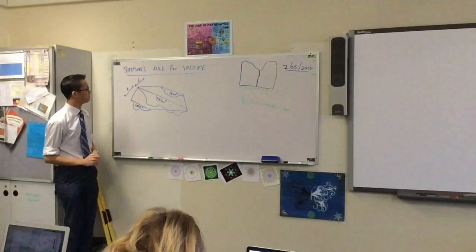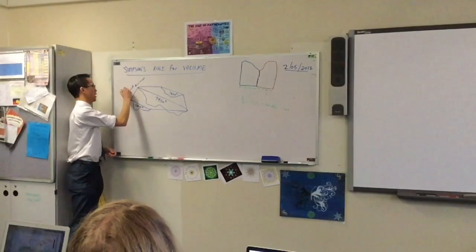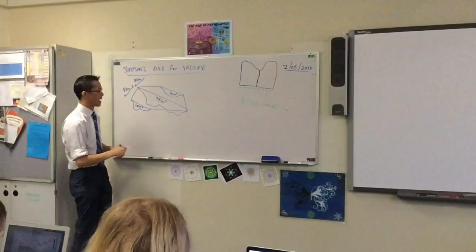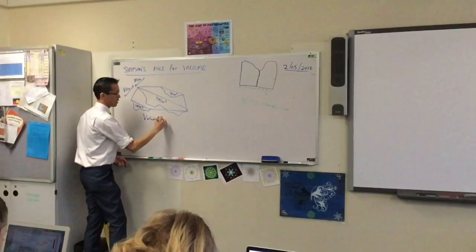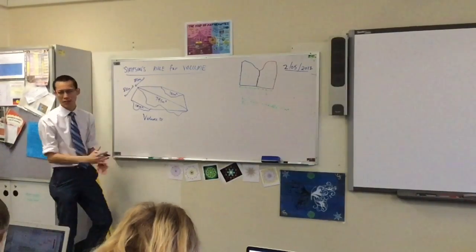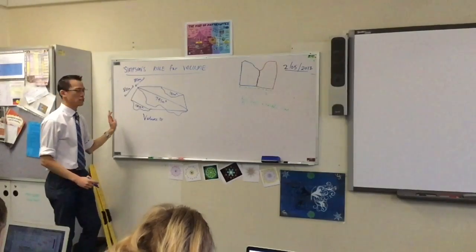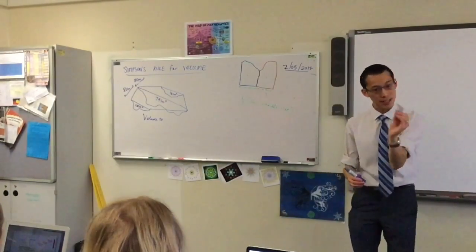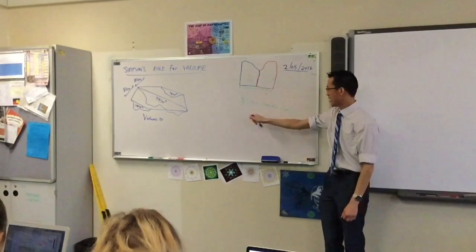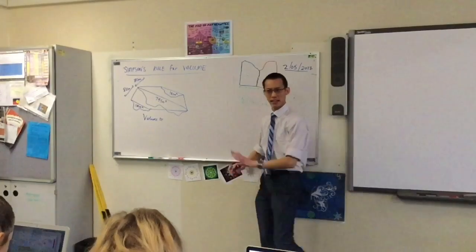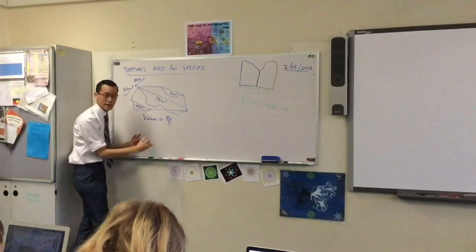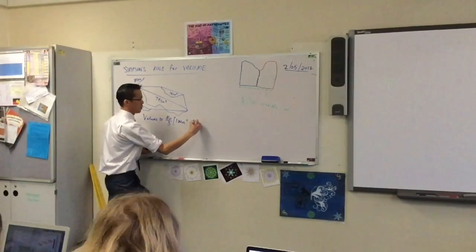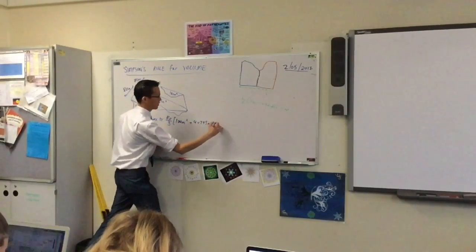We need one more thing — this distance over here. Let's call it 80. Remember, the spacing has to be consistent all the way through. So now I can say: volume is approximately equal to — and I'm going to use Simpson's rule just like before. Here's my H — 80 on 3. You identify H because it's the consistent spacing; it only appears once. Then I've got 100 square metres, 4 lots of the middle value, and this last one.